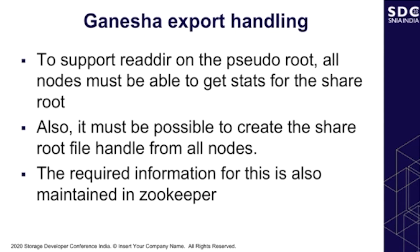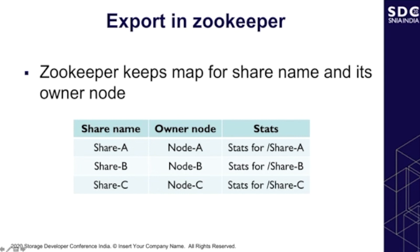With NFS v4 we need to support readdir on the pseudo root, which means all nodes must be able to support the readdir operation and list all shares. This also requires the Ganesha service on every node to create a root file handle, which requires information about each share. This basic information for every share is maintained in Zookeeper. The Zookeeper map has every share name, the node that owns the share, and stats for that share — which are used to generate the readdir-plus information. This allows all nodes to support readdir on the pseudo root.